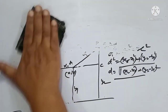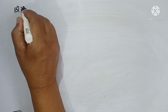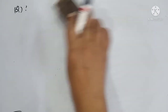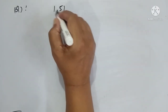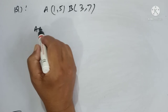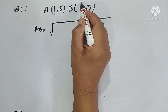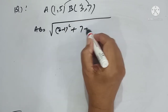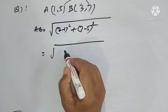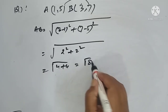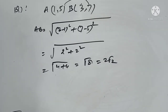Now we take some examples. First question: we have to find the distance between the two points (1, 5) and (3, 7). Let this be A and this be B. Then AB is equal to the square root of (3 minus 1) whole squared plus (7 minus 5) whole squared, which equals 2 squared plus 2 squared, equals 4 plus 4, equals square root of 8, which equals 2 root 2. So the length between A and B is equal to 2 root 2.